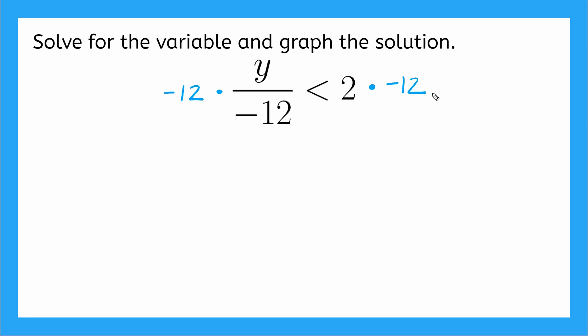But ding, ding, ding, what's the rule? If we multiply or divide by a negative number with an inequality, what are we going to do? We're going to flip this sign. So we can start, just flip our sign right there. So my negative 12s cancel out. I'm left with y is now greater than 2 times negative 12 is negative 24. Amazing.